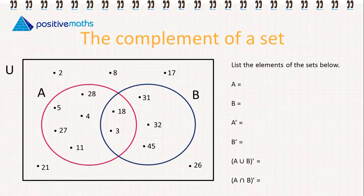Now we're going to work on listing the elements of the sets below. So the first set we have to list the elements for is A. So this is going to be 3, 4, 5, 11, 18, 27, and 28.